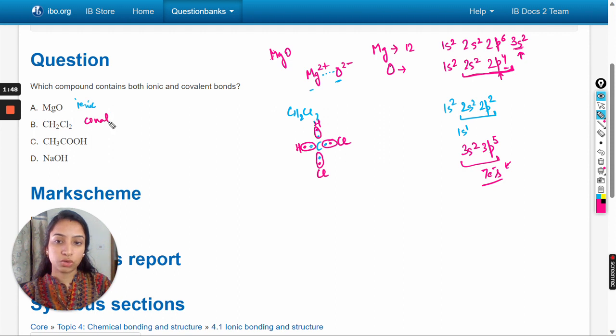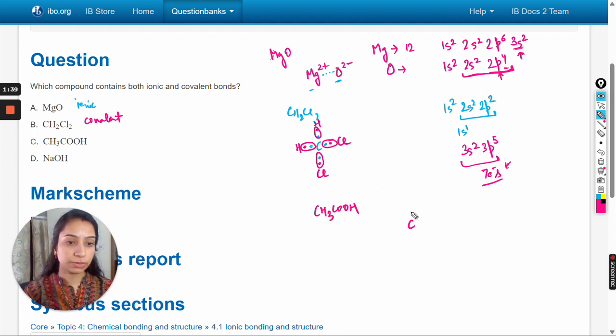Similarly, CH3COOH. Here I'll just draw the structure. There is a single bond between the carbon and three hydrogens, single bond with another carbon, double bond with oxygen, single bond with the oxygen, and single bond of oxygen with hydrogen. So here all are covalent bonds in CH3COOH.